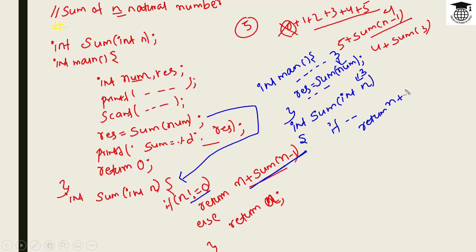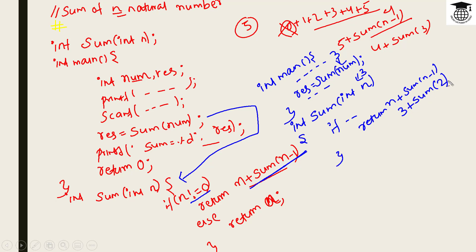We have number 3 here. So we call sum(2), which will again call the function recursively.